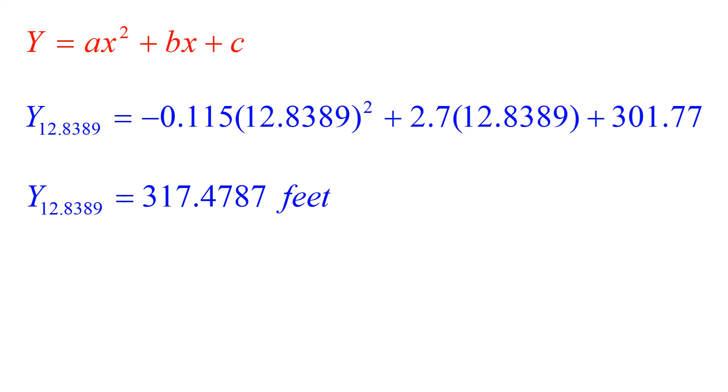This gives us an elevation at a distance x from the PVC of 12.8389 stations of 317.4787 feet.